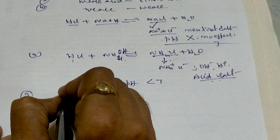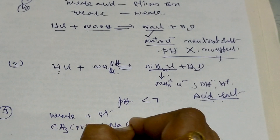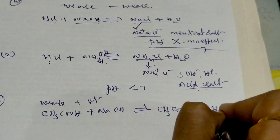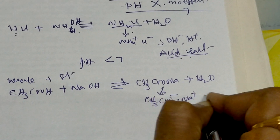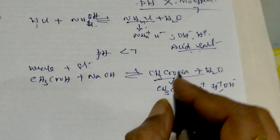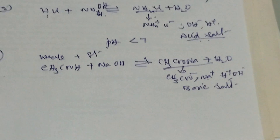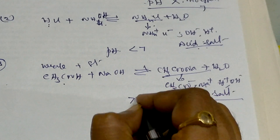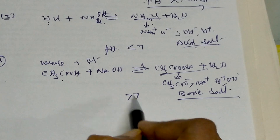The third case: weak acid plus strong base. I am taking acetic acid and sodium hydroxide as the strong base. That gives sodium acetate plus water. It will be hydrolyzed into CH3COO minus, Na plus, H plus, and OH minus. This is a salt of a weak acid and strong base — it is called a basic salt. NaOH will reform because of the weak acid. Its pH will be more than 7.